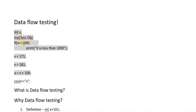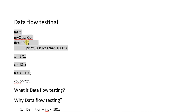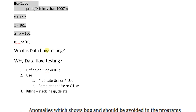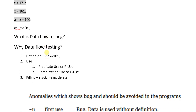Here we are comparing the variable X with 1000, but the variable X was not defined or initialized with some content. So this is a logical mistake — at this point the variable X has some garbage value, and we are comparing that garbage value with 1000. This type of logical bug is easily identified by data flow testing.